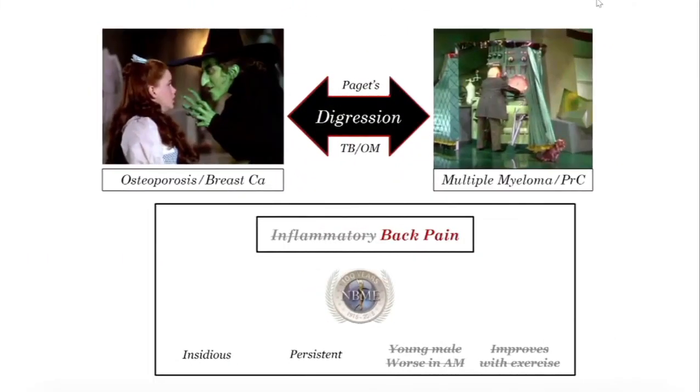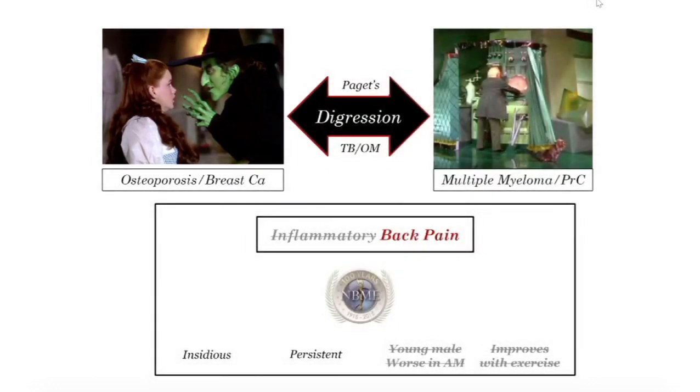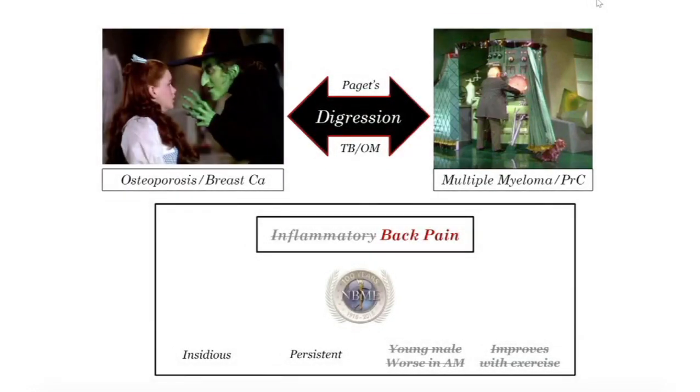A digression on back pain for the boards: besides discogenic, for a woman predominantly, think osteoporosis — invariably compression fractures. Breast cancer — metastatic breast cancer — for back pain in a woman. In a male, men and women get multiple myeloma, but for whatever reason they seem to save that one for men, along with prostate cancer. When you get back pain in an older guy on the boards, think myeloma or prostate cancer. The other main issues for back pain: Paget's, TB, osteomyelitis.